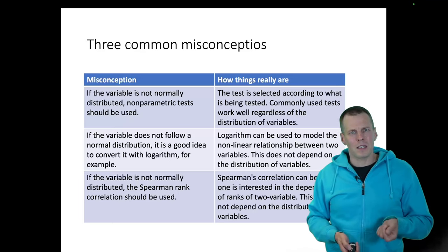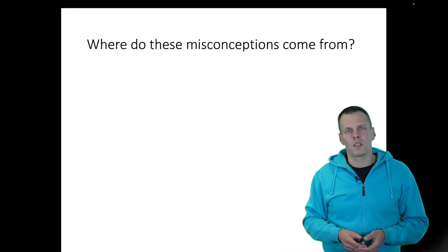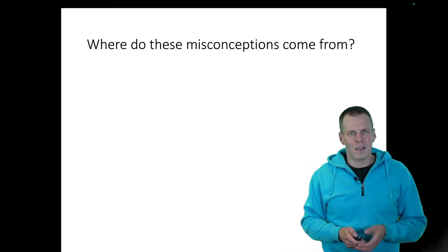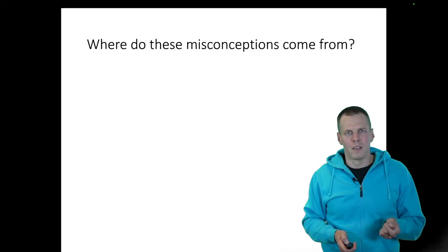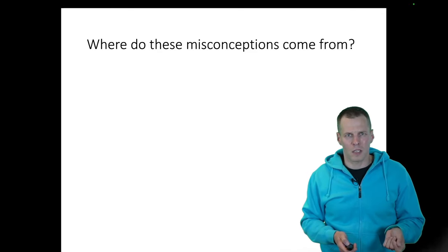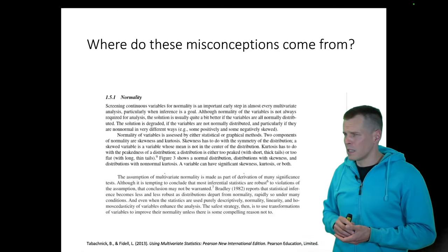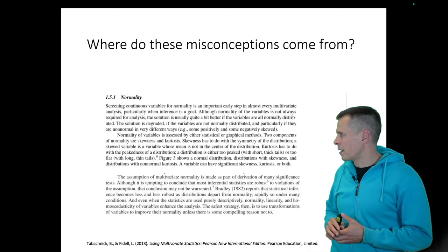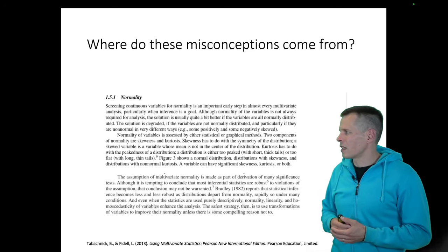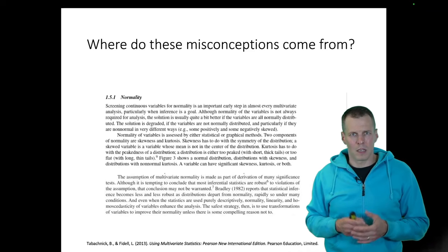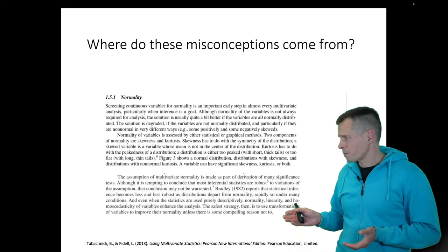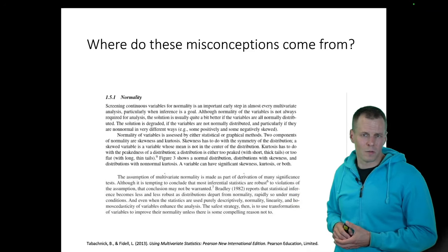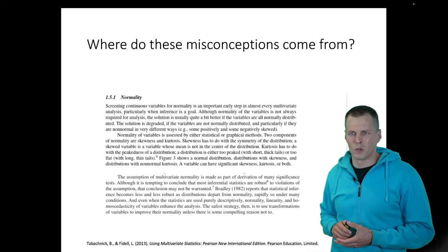Where do these misconceptions come from? Students don't invent these rules of thumb themselves — they come from books and courses. For example, this fairly popular book on statistical analysis by Tabachnick and Fidell says normality is an important assumption to check and that statistics might give you misleading results if normality doesn't hold. That's not true in most cases.